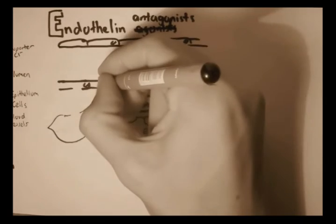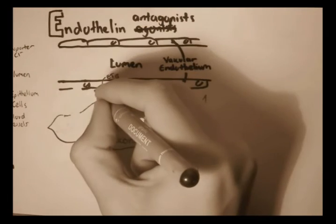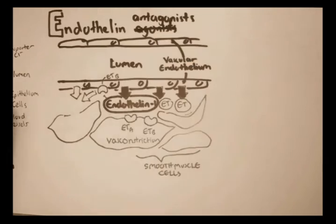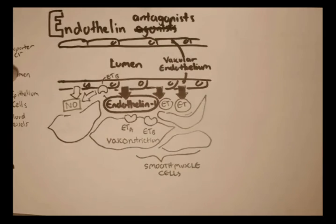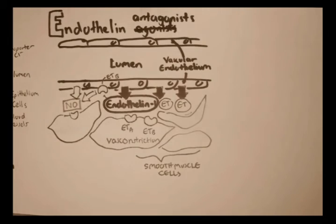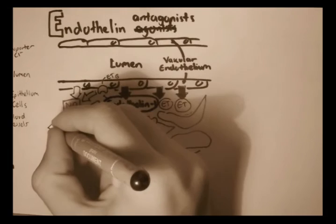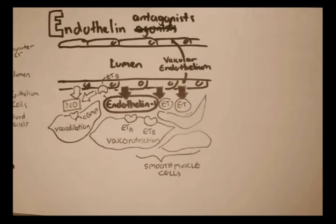There are also endothelin receptors, endothelin-B receptors, bound on the vascular endothelium cells. And what they do is that when it binds, it secretes nitric oxide. So when endothelin binds to these receptors on the vascular endothelium, it secretes nitric oxide, which then binds to receptors found on the smooth muscle, a different receptor found on the smooth muscle, which causes vasodilation through a cyclic GMP mechanism.